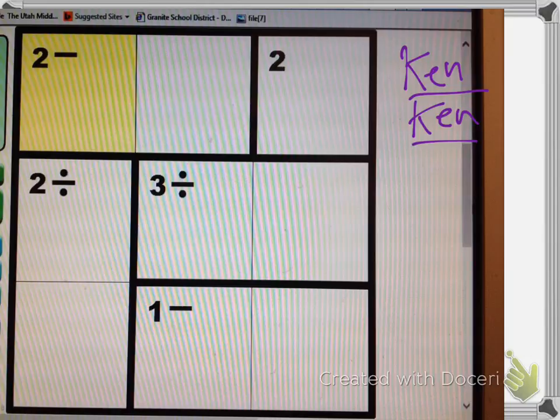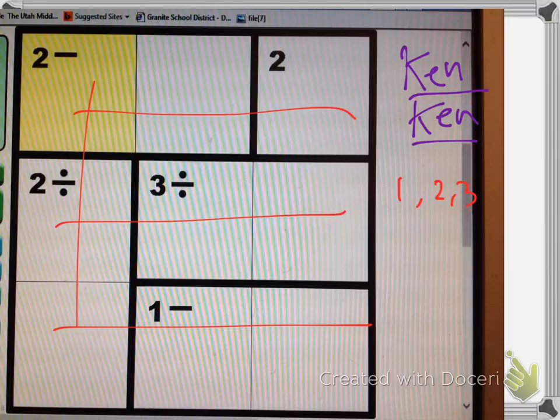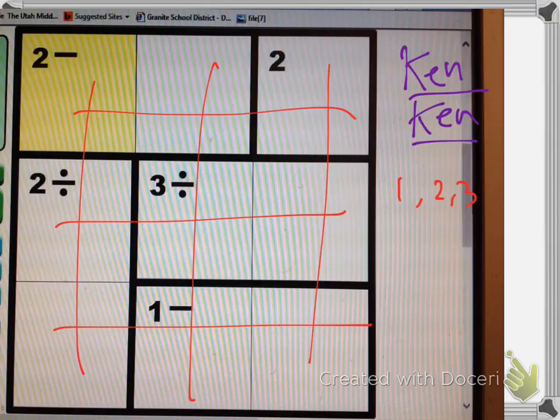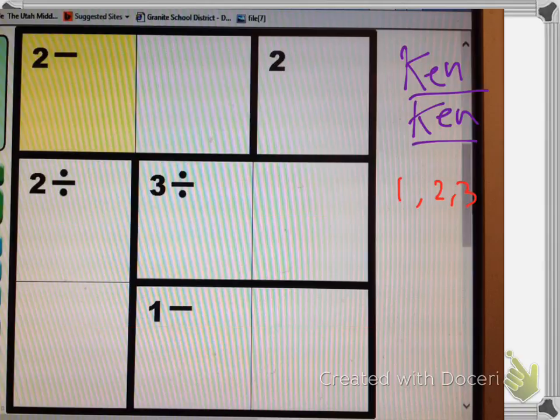And I will be sending all the teachers a copy of the correct answer for the one you guys are going to do. So anyway, Ken Ken's a lot like Sudoku. You have to put the numbers 1, 2, and 3 in all the rows and all the columns. You can't have two 2's in a row or two 1's in a row or two 3's in a column. It's got to be 1, 2, and 3 in each row and column in any order so that it works.